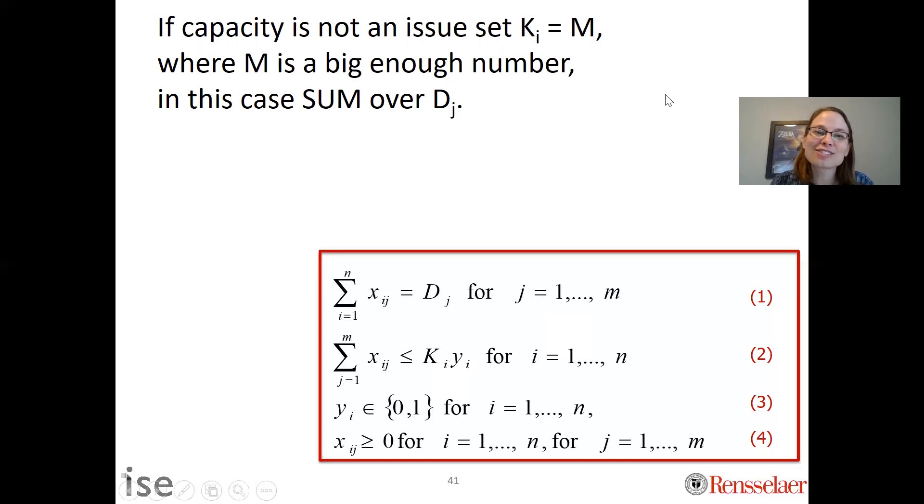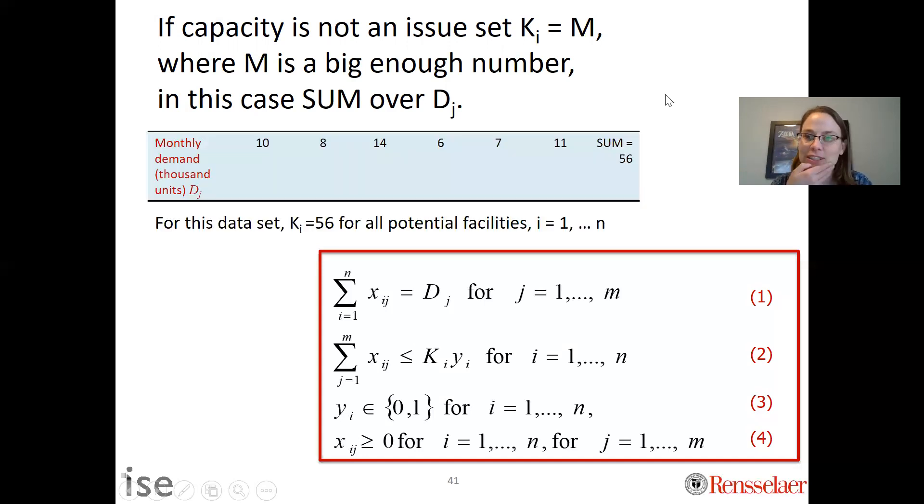Let's consider the example we did in Excel. We have all these different demand locations. The biggest you would ever need is if one facility was built and all of demand was satisfied from that. If I sum up all of this I get 56, so I should still have constraint two but set ki to 56 for all of them and then solve it as usual.